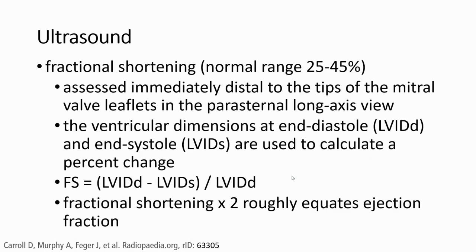Fractional shortening has a normal range of around 25 to 45%. Assessment is performed at the level of the tip of the mitral valve leaflet in the parasternal long-axis view. The ventricular dimensions at end-diastole and end-systole are used to calculate fractional shortening.